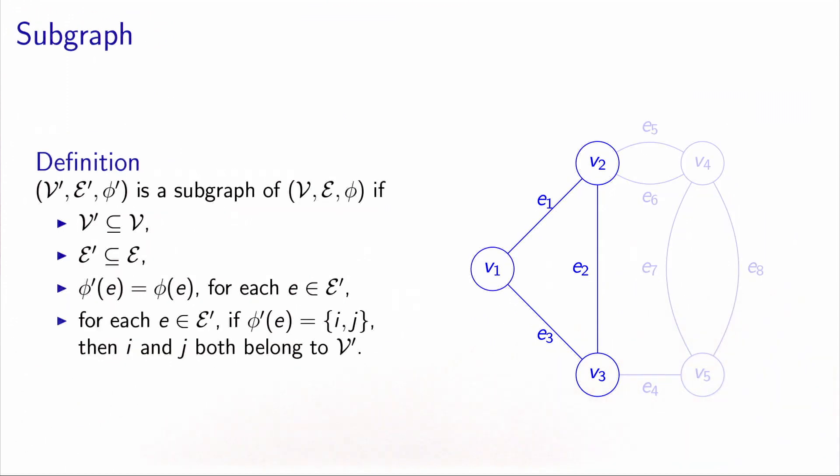An interesting notion is the notion of subgraph, which is selecting a subset of vertices and a subset of edges in a consistent way. The formal definition means that a graph is a subgraph of the original graph if the vertices are a subset of vertices and the edges are a subset of edges.